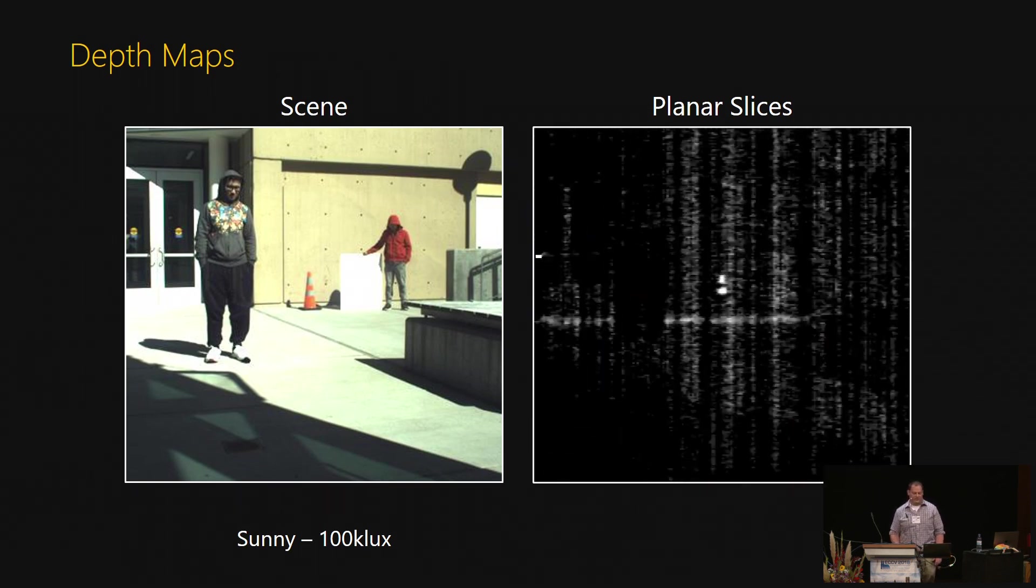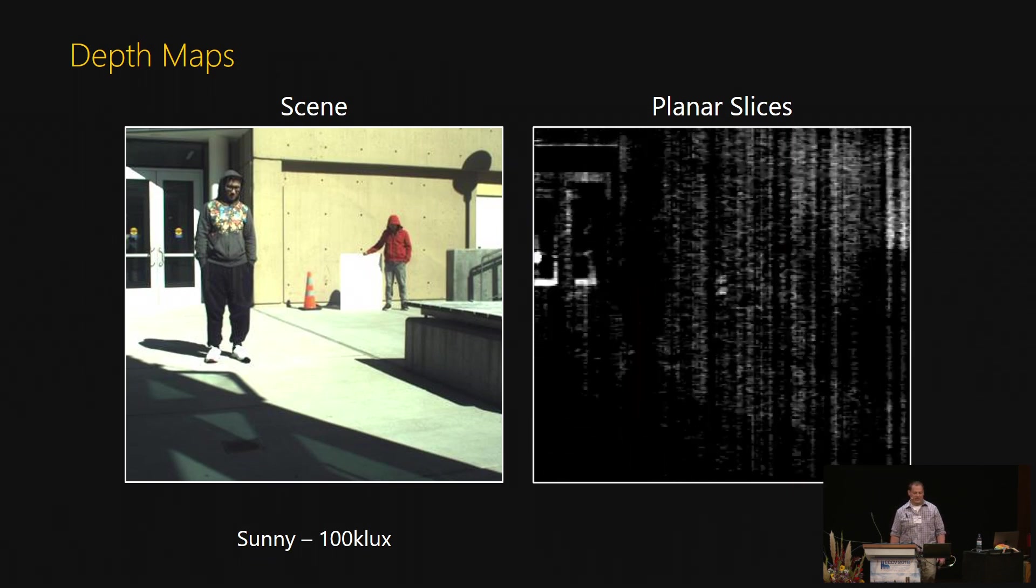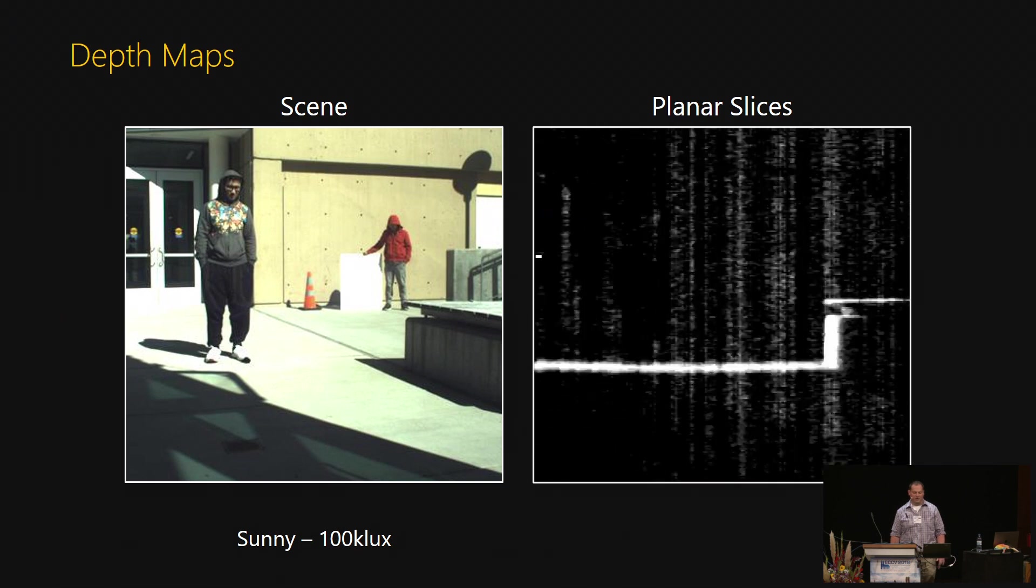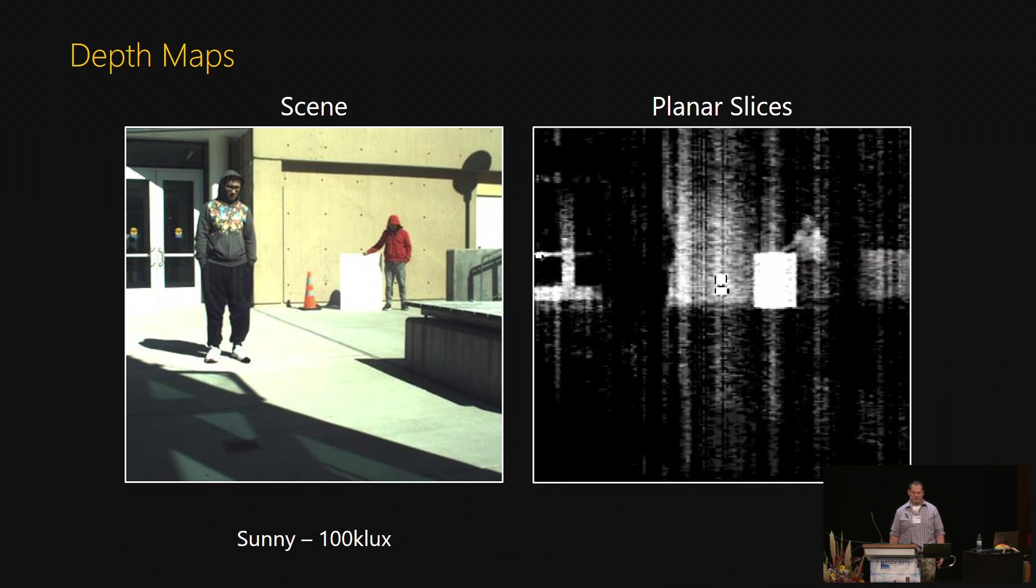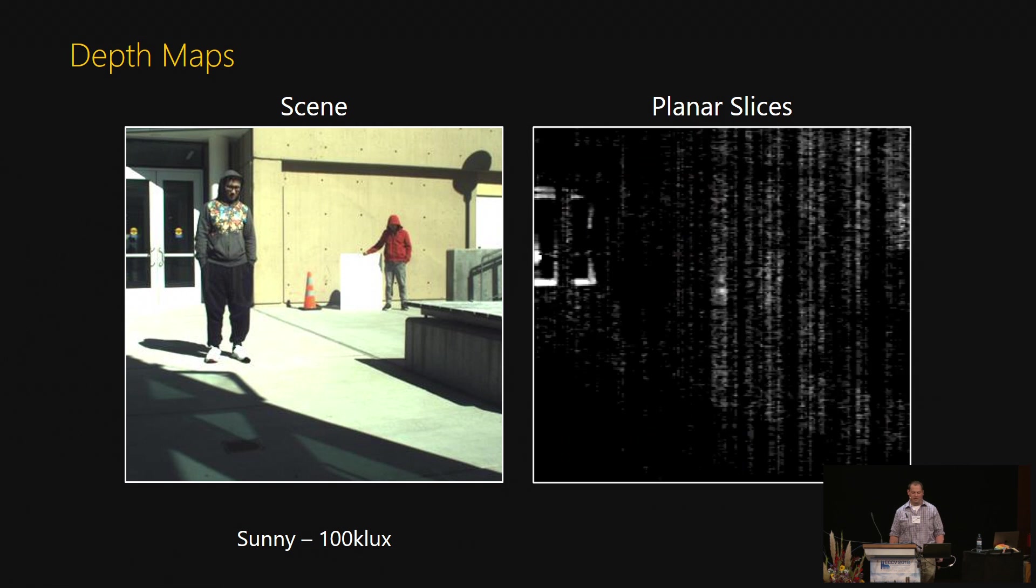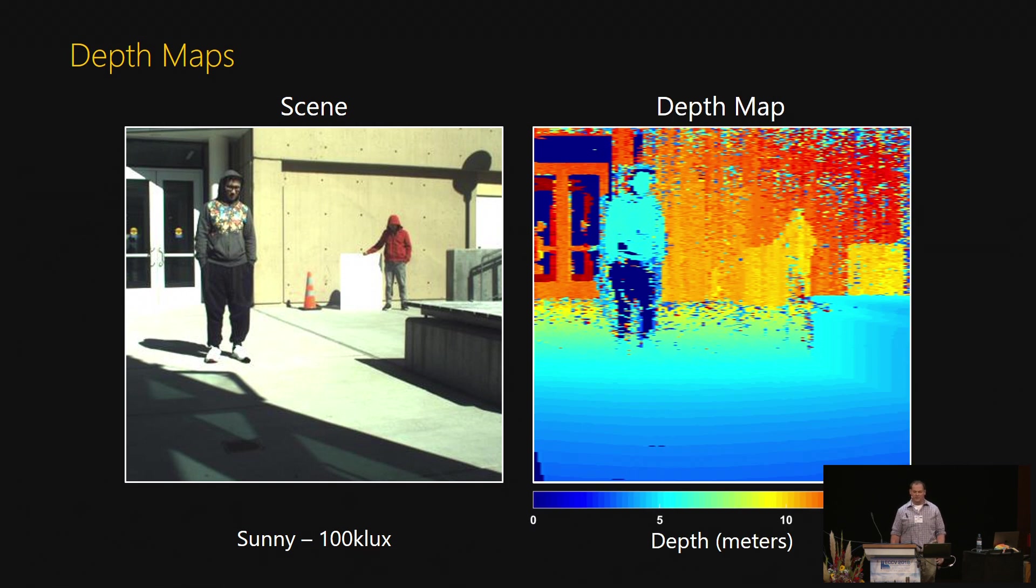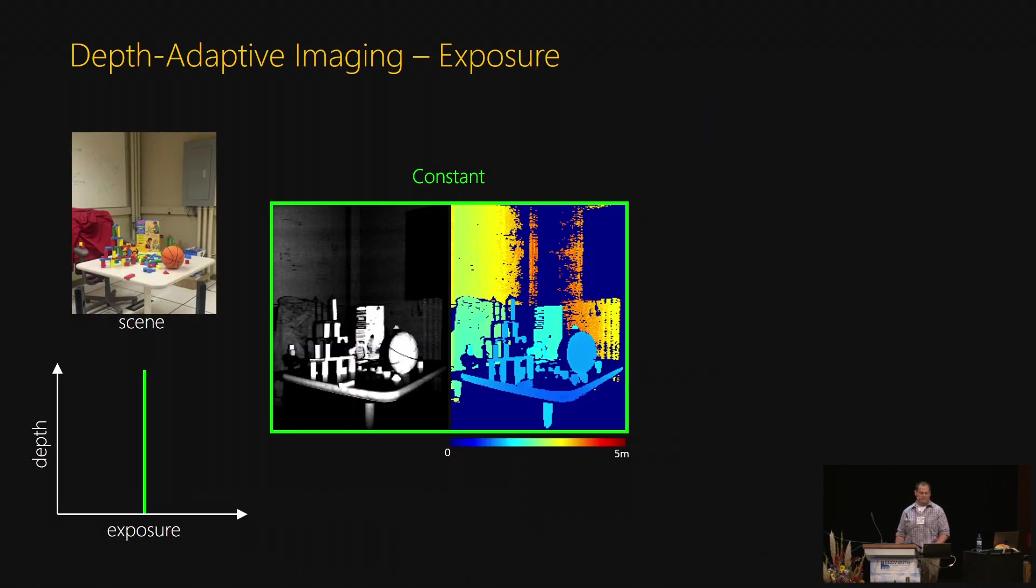This device can also create depth maps. Here, a depth map is obtained by sweeping planar light curtains through the volume. Images from each depth are fused together to create the depth map. Here, we used 40 discrete planes, but you can increase the depth resolution by sweeping through more planes.